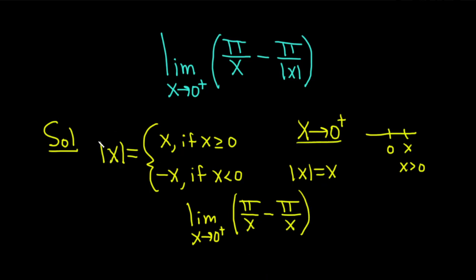That's because x is approaching 0 from the right. The piecewise function says it's equal to x if x is greater than or equal to 0. This is beautiful because pi over x minus pi over x is 0.